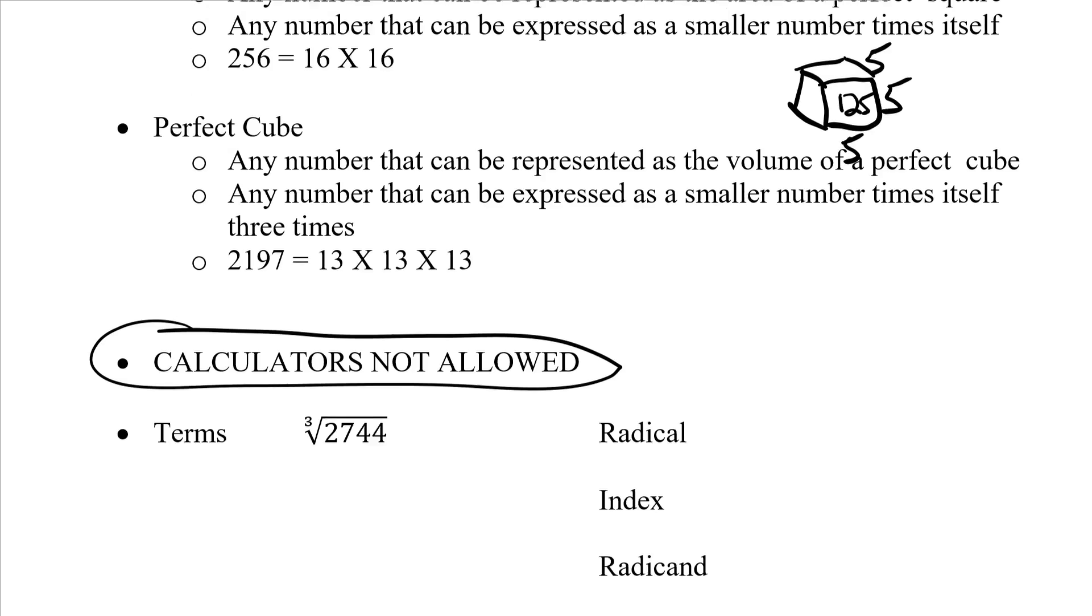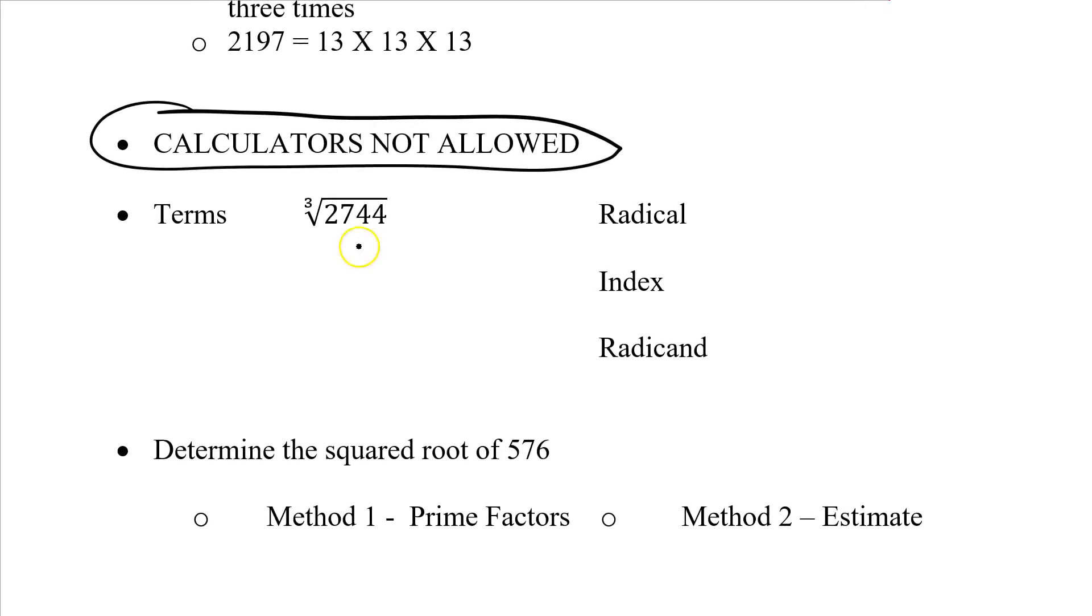Let's take a look at some terms here. We've got the cube root of 2,744. We know it's a cubed root because the 3 is above our root sign. We could have a square root, a cubed root, 4th, 5th, 6th root, whatever number we're dealing with as the root appears above the sign. There are three terms we have to use. First one is the radical. The radical is the entire thing, so the radical is the cube root of 2,744. In that radical, we've got two ideas, the index and the radicand. The index is the small number outside the root sign, so in this case it's a 3. And the radicand is the number underneath, so it's 2,744.